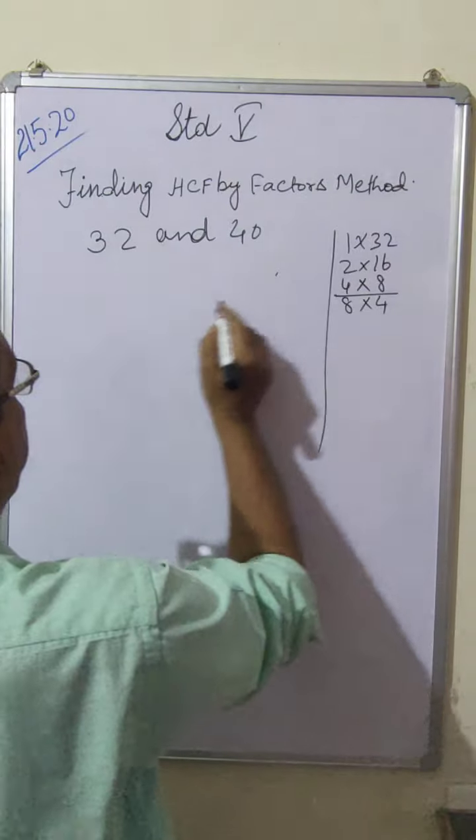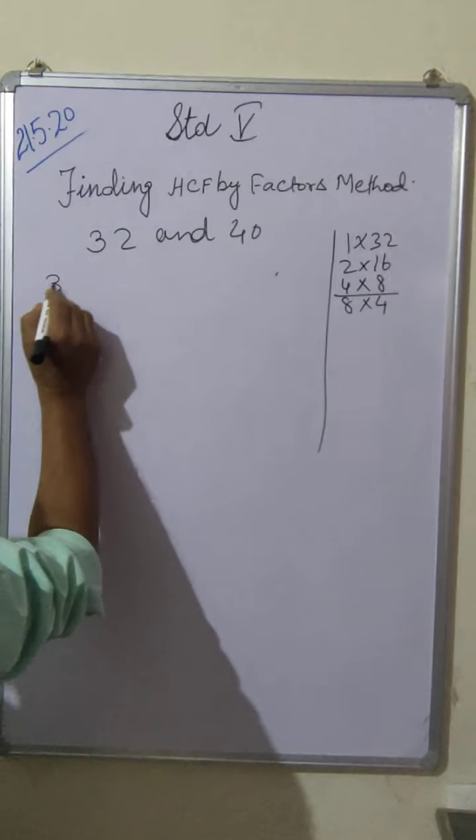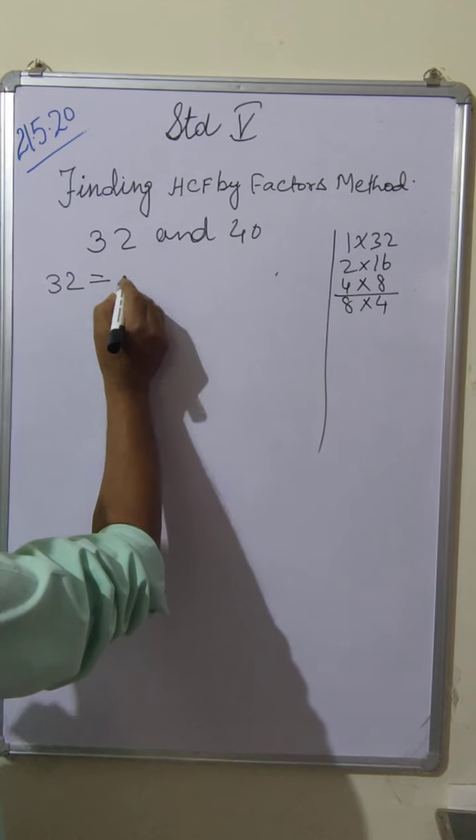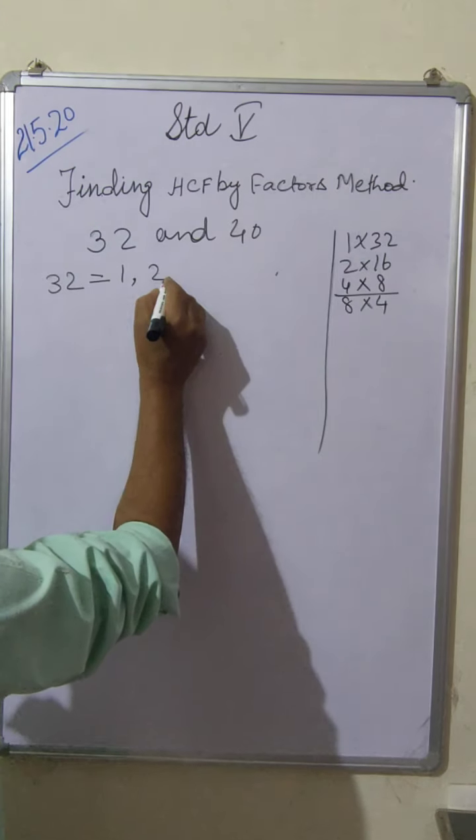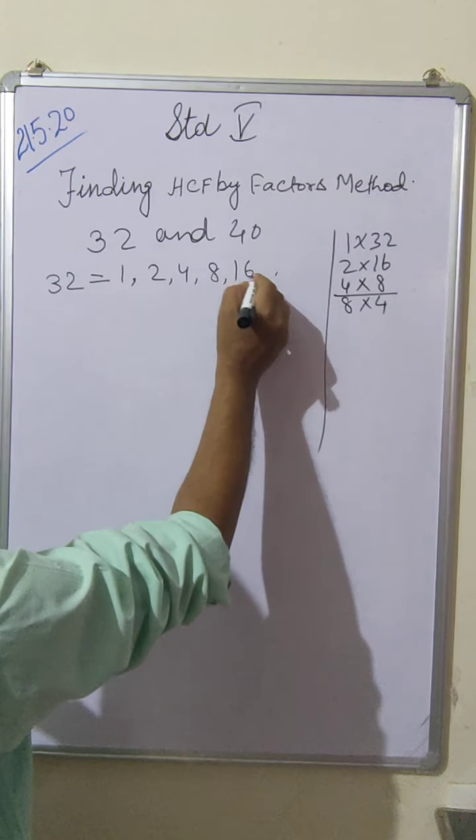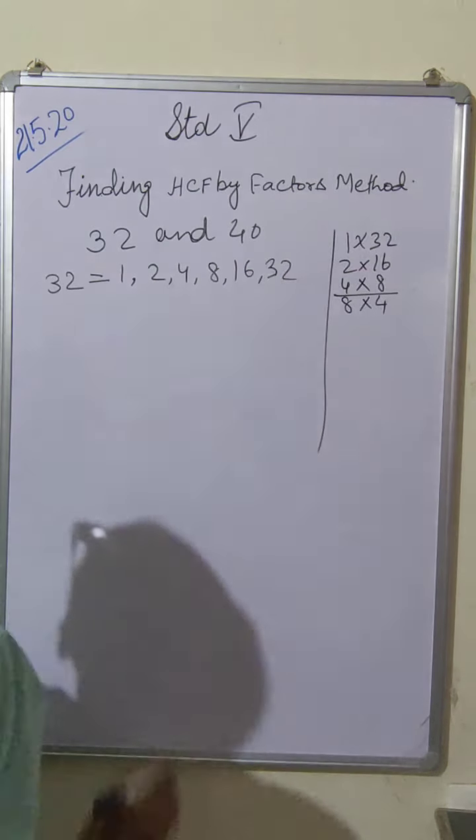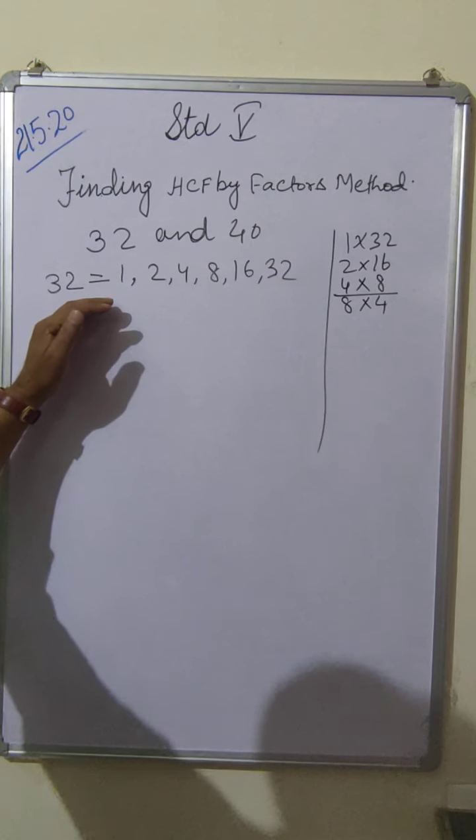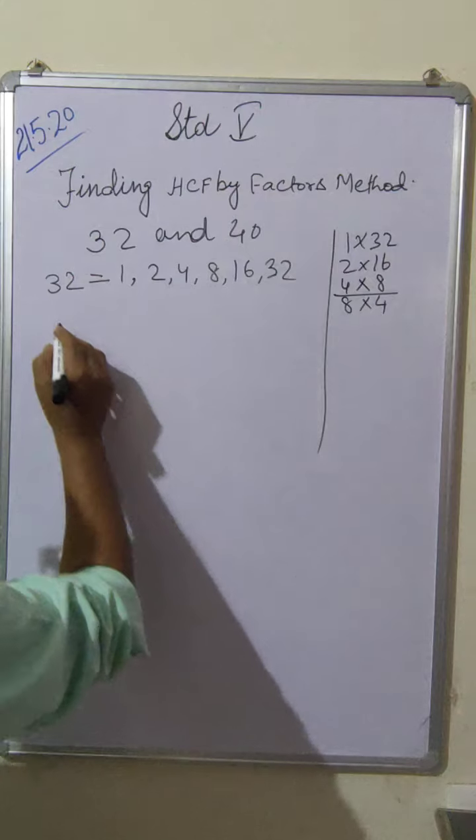Repetition, so factors of 32 are 1, 2, 4, 8, 16 and 32. In the same way you have to find the factors of 40.